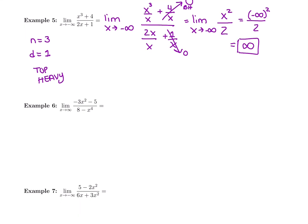The next one — compare the degree of the top and the degree of the bottom. The degree of the top is 2. The highest power of x in the bottom is 4. So what case do we have? 2 and 4 — bottom-heavy. Bottom-heavy is the best. The answer is always 0. Dividing something small by something huge, you don't have enough to go around.